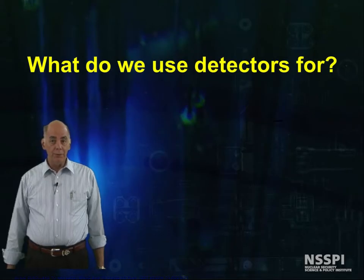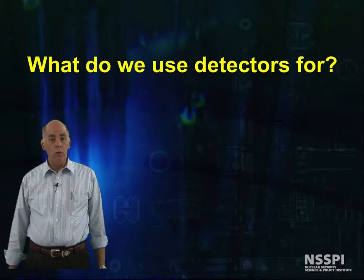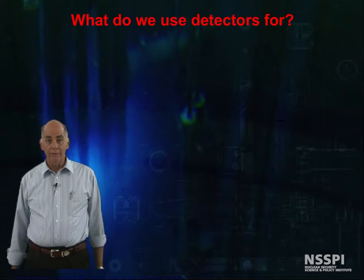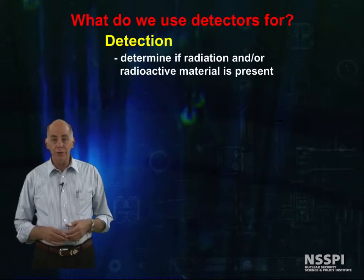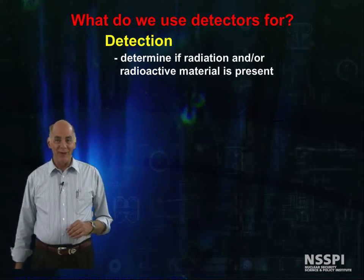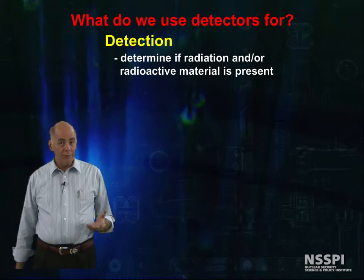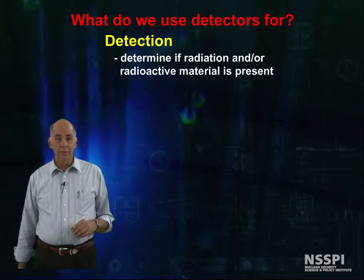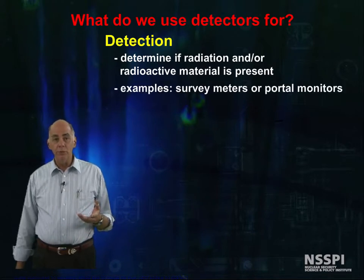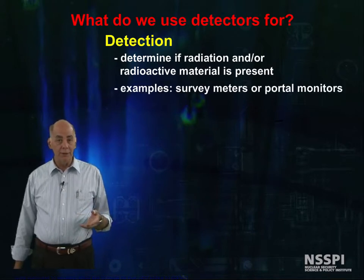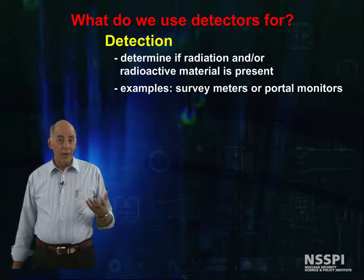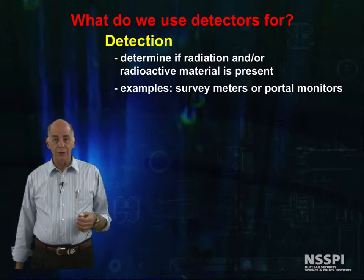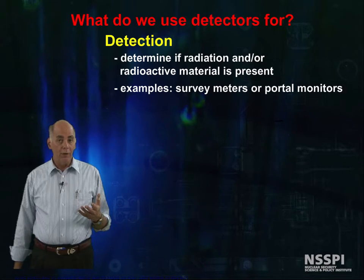The first question we should probably ask is exactly what do we use detectors for? Well, as the name implies, a detector's first use is the detection of radiation or radioactive material. And sometimes that's all we need to do. An example of this would be using a survey meter, such as a Geiger counter, to look for radioactive contamination. Or, as another example, portal monitors to check and make sure no one is walking out the door with a radioactive source.